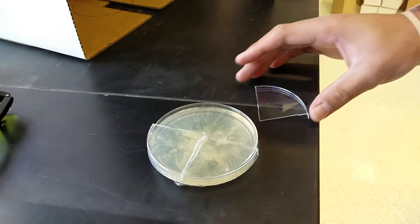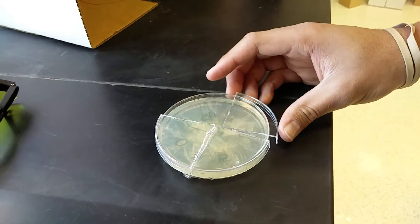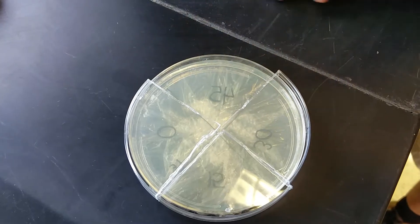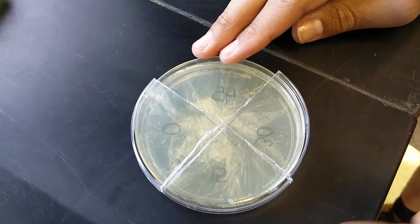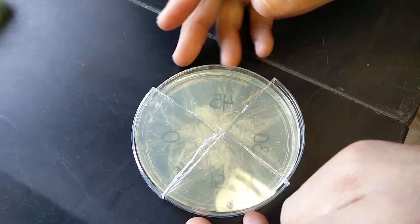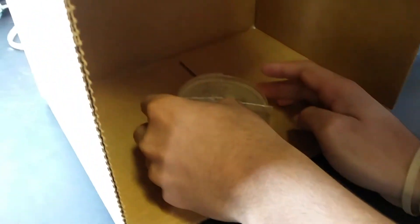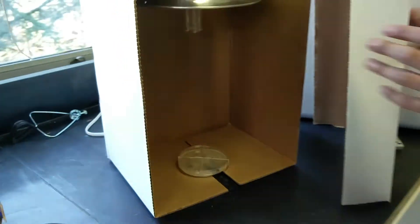As you're about to expose the plate to the UV light, you want to have all the sectors except for the one that you're exposing covered with the petri dish quarters. As you can see, I only have 45 exposed and all the other ones are covered. Now I'm going to take the plate and put it in the center of the bottom of the exposure box.